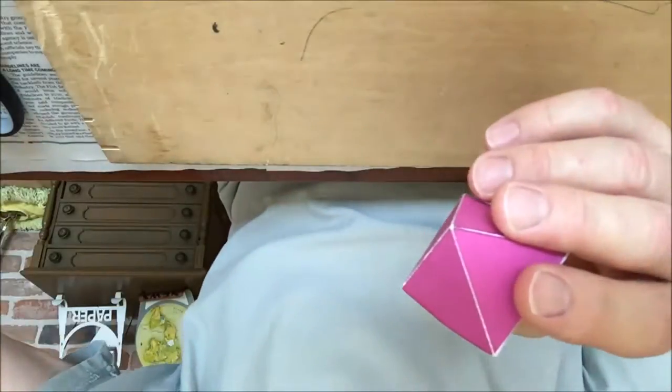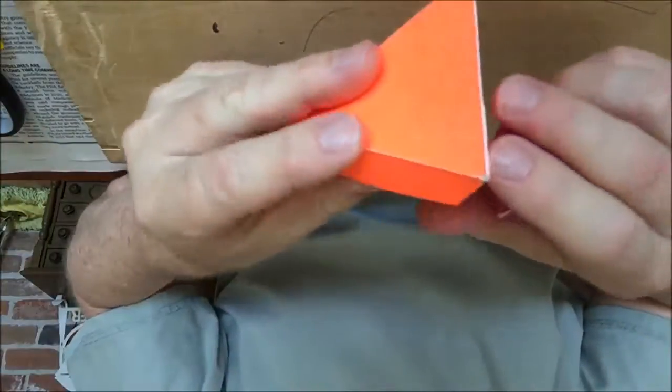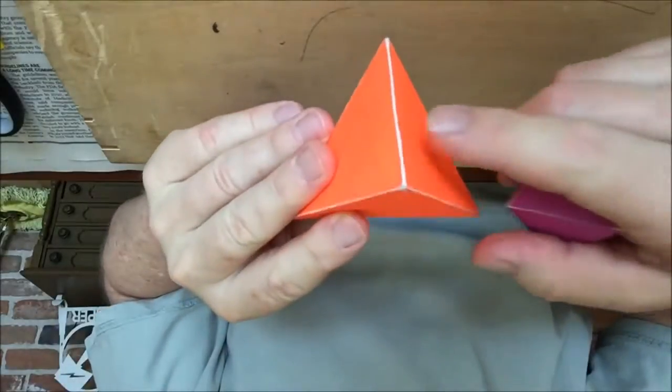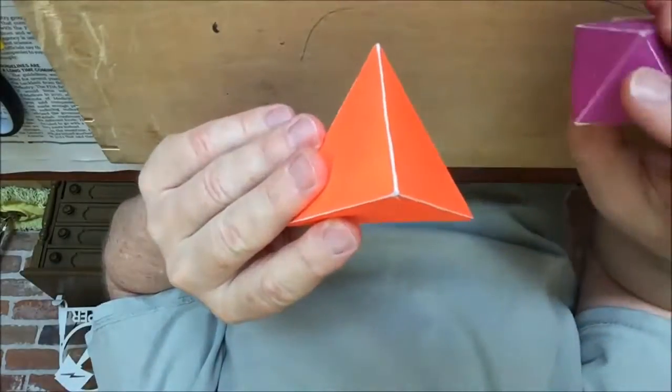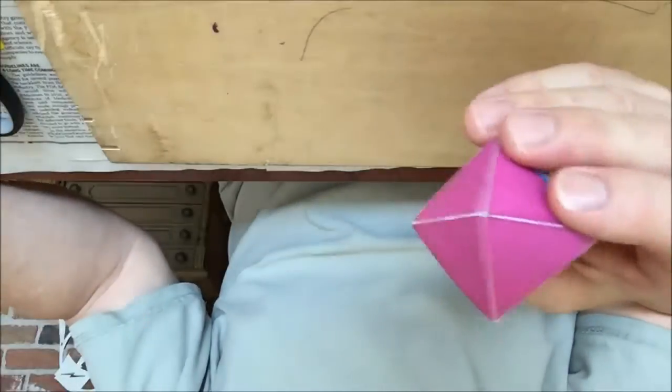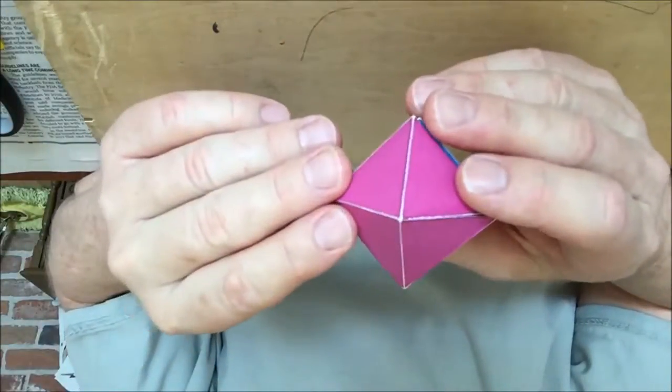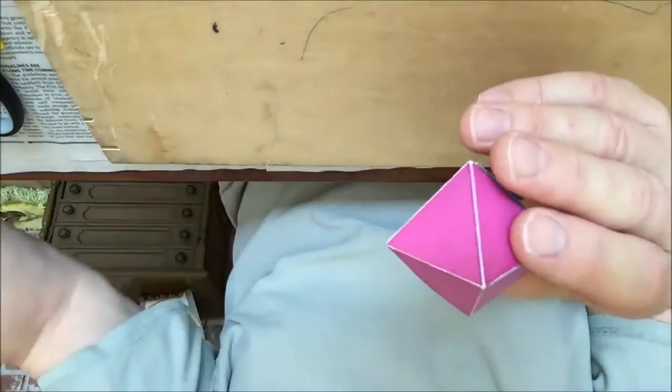Where the tetrahedron has three triangles meeting at a vertex, the octahedron has four triangles meeting at a vertex. The octahedron fits inside the tetrahedron in the nested set.